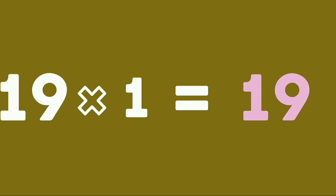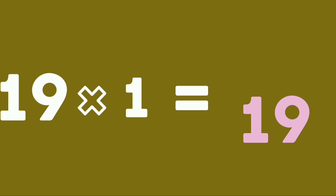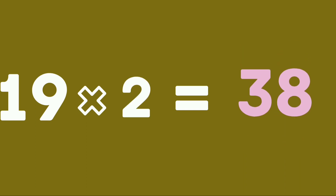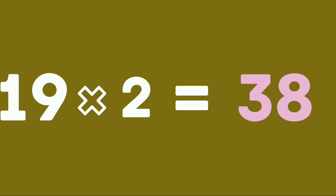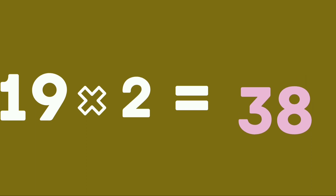Nineteen ones are nineteen. Nineteen ones are nineteen. Nineteen twos are thirty-eight. Nineteen twos are thirty-eight.